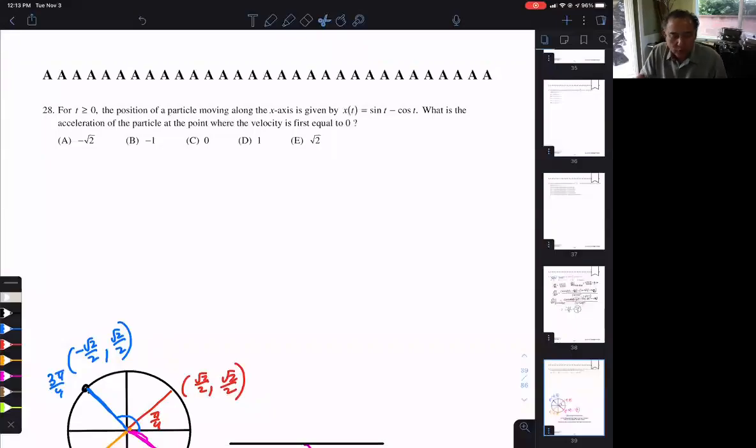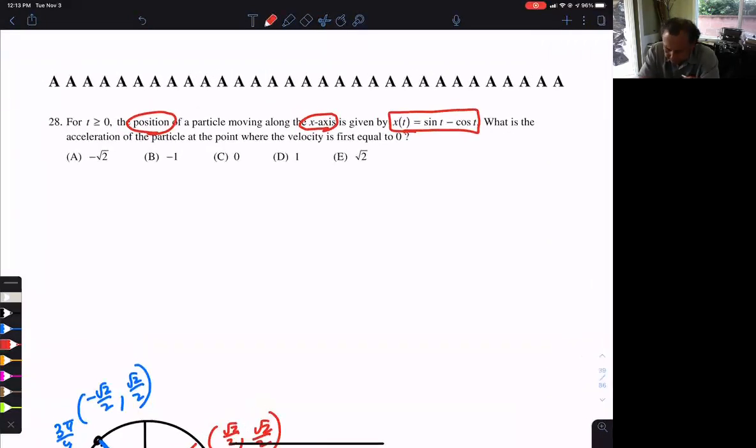So this is 2012, number 28, and let's point out the important things. We are told something's moving along the x-axis, and the position is that. There is the position function. They want to know the acceleration when the velocity first equals zero. So obviously, we need the velocity and acceleration of this.